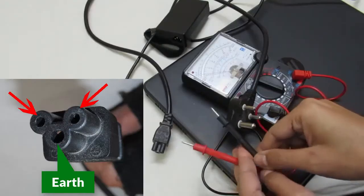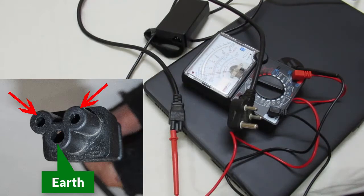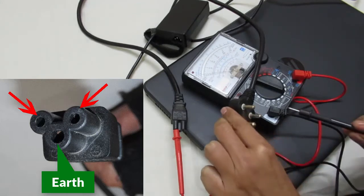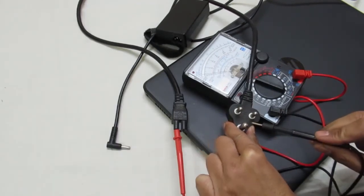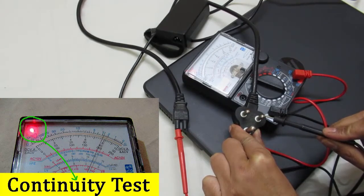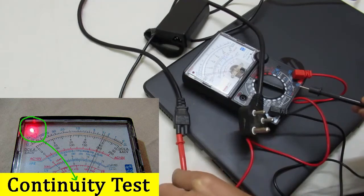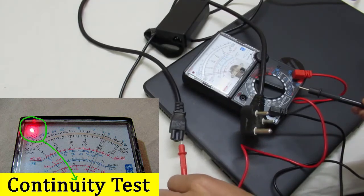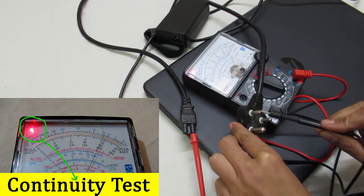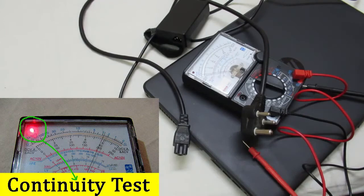Now I am going to check continuity on this cord. Insert any probe in any side of this connector, then set the multimeter to check continuity and touch the other probe on the other side of the pins. If the multimeter is showing continuity, that means the cord is working properly. Repeat this process on both sides.